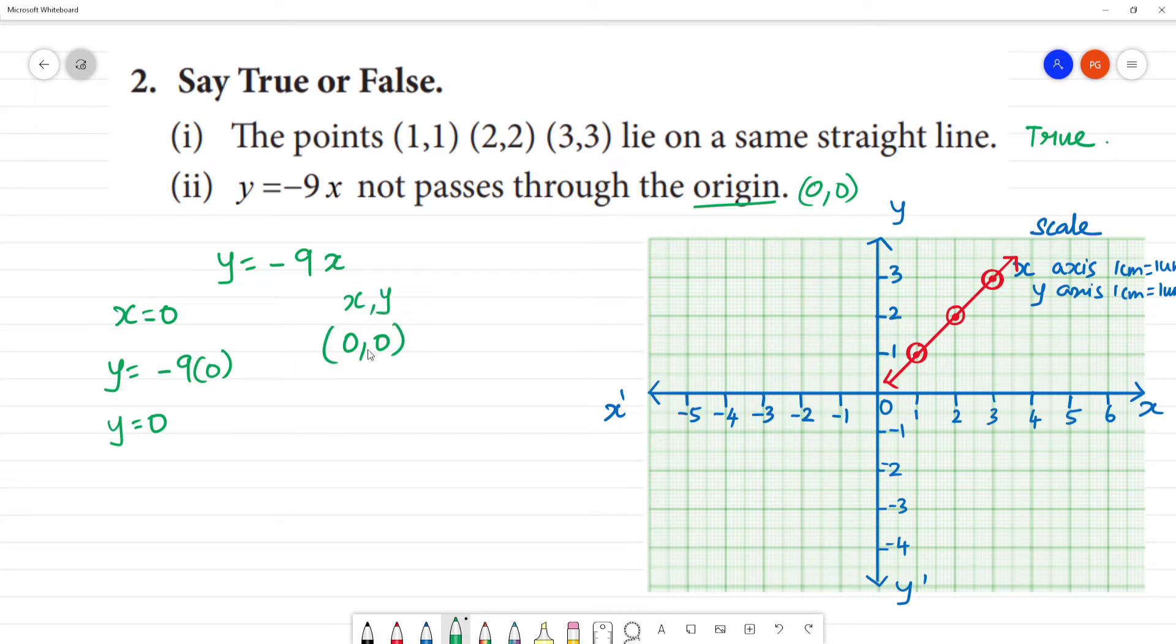So, the point (0,0). What does this tell us? This line - y = -9x - will definitely pass through the origin.